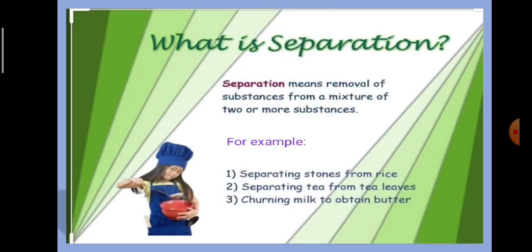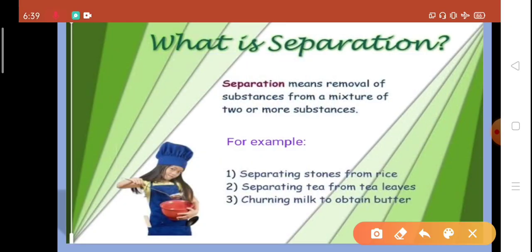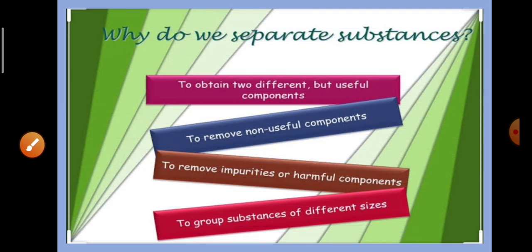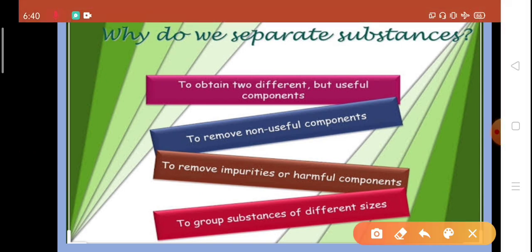Before that, we need to know the meaning of separation. Separation means removal of substances from a mixture of two or more substances. For example, we are separating stones from rice — there are two substances: stones and rice — and we can separate them using different methods. Another example is separating tea from tea leaves.